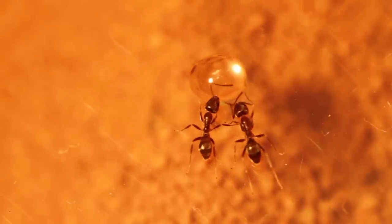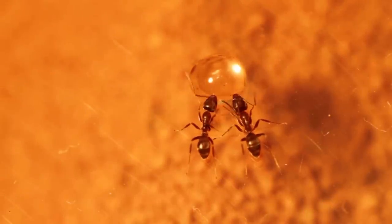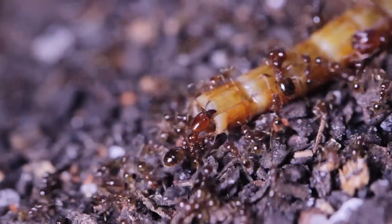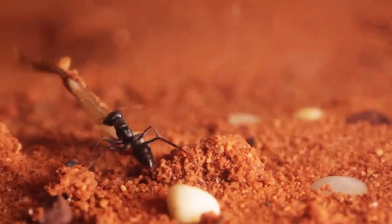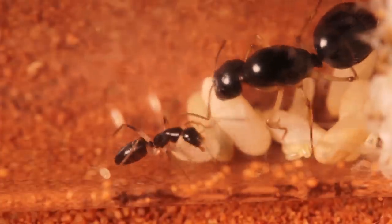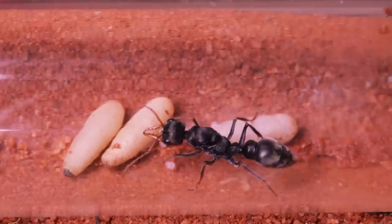A well designed nest is comprised of two main elements: the foraging area, where the ants collect their food and dump their garbage, and the nesting area, where all the ants reside and store their brood.